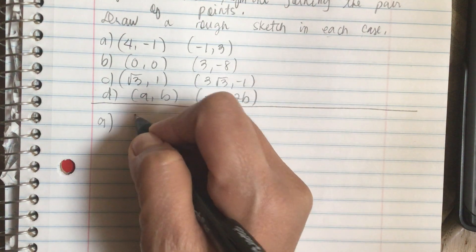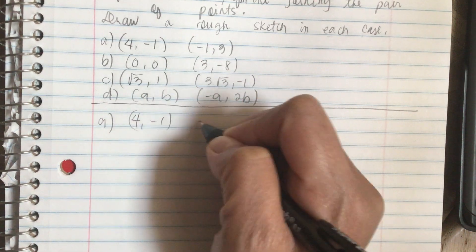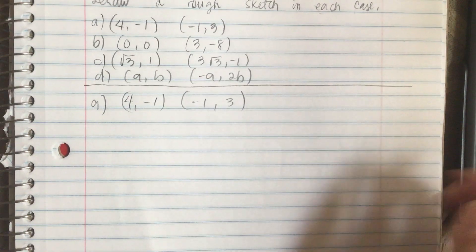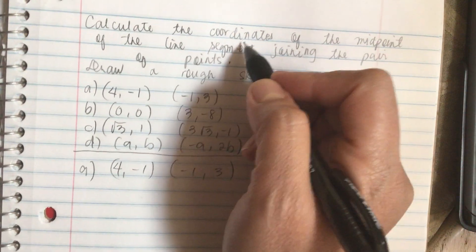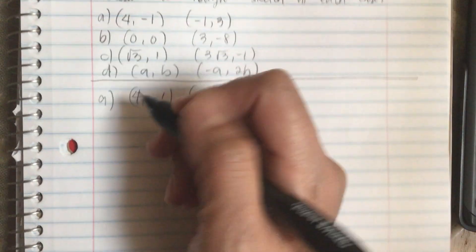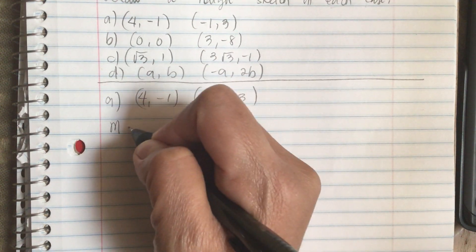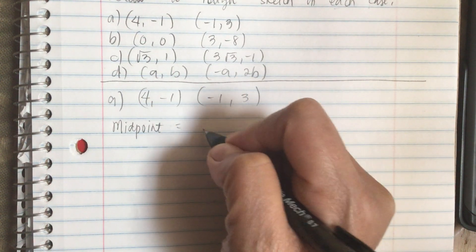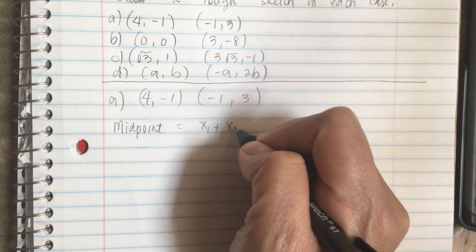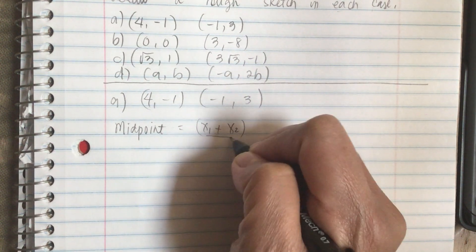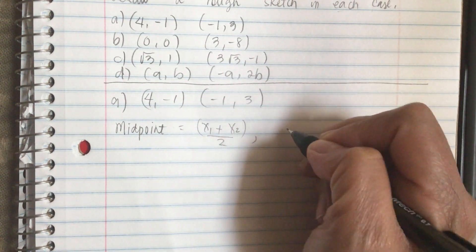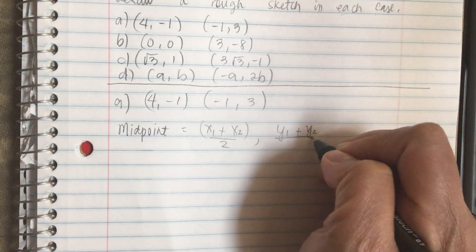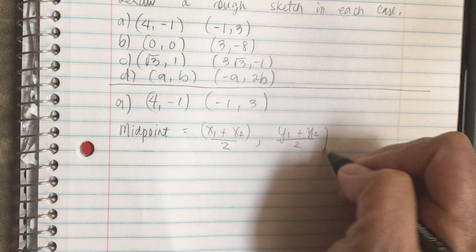For part A, we have (4, -1) and (-1, 3). The formula for midpoint is: midpoint equals (x1 plus x2) all over 2, and (y1 plus y2) all over 2.